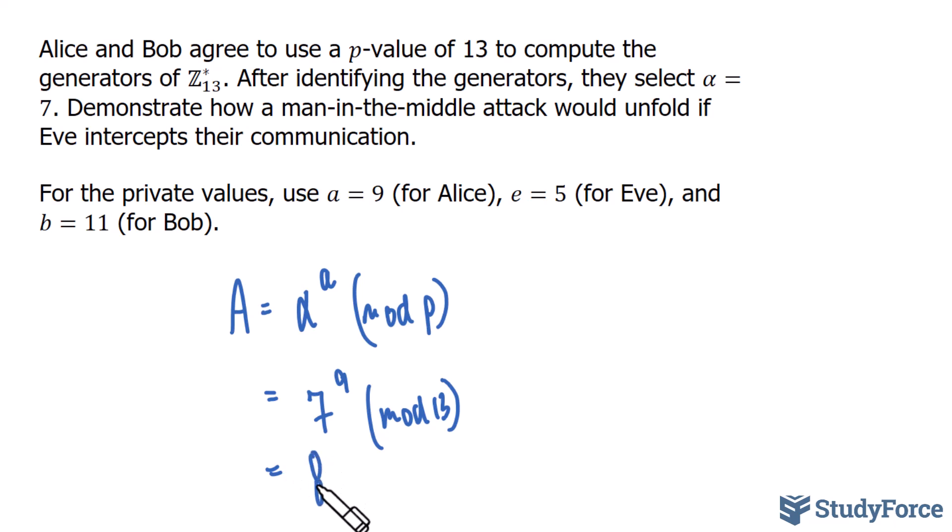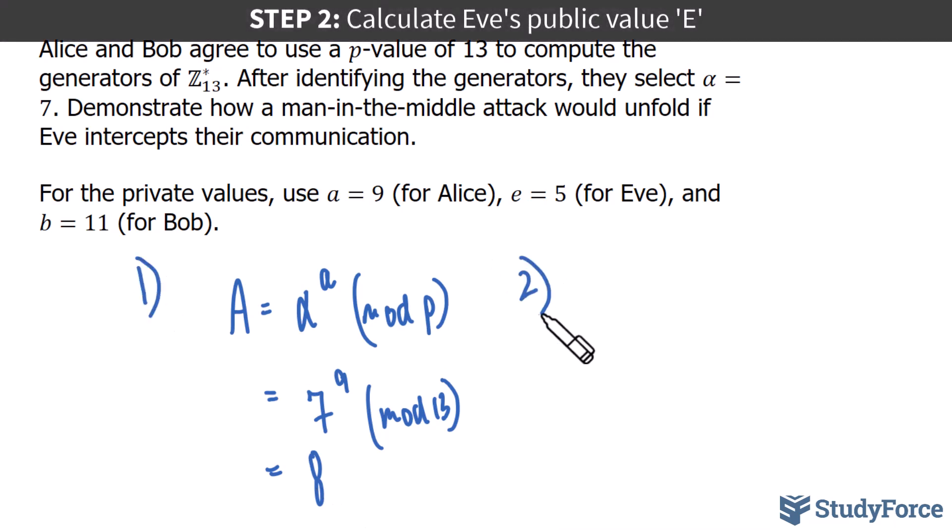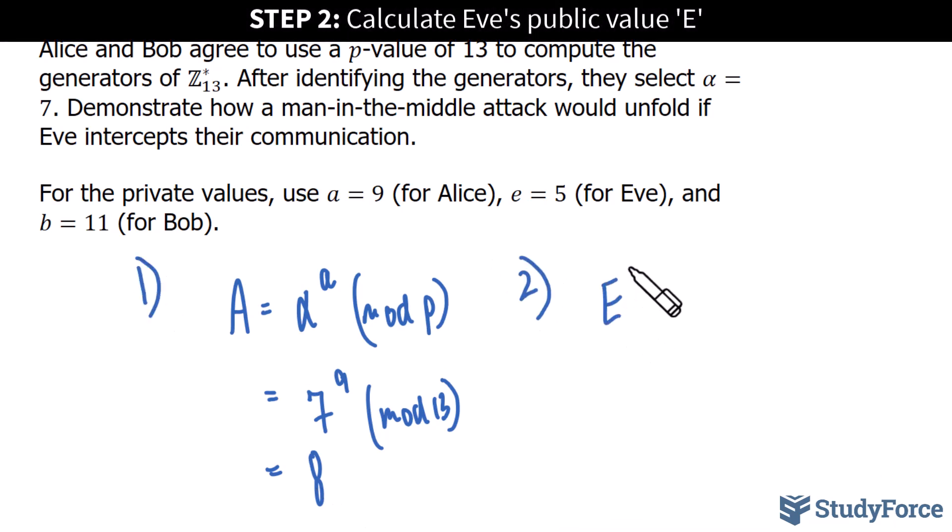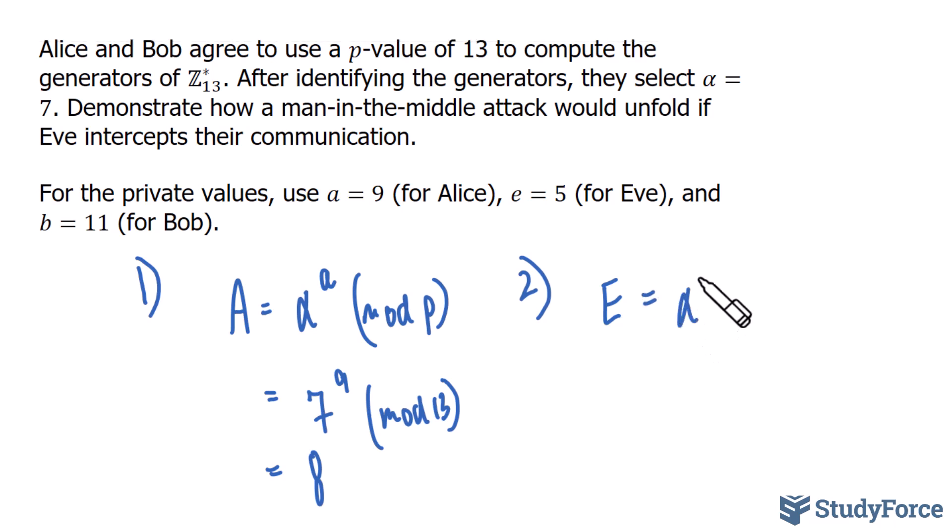Remember that this value has been intercepted by Eve. So in step number two, Eve sends Alice her public value of E, and that's calculated much the same way, where we have alpha raised to the power of e, mod p. Let's fill this in, 7 to the power of 5, mod 13. Whatever 7 to the power of 5 happens to be, we take that mod 13, and you should end up with an answer of 11.